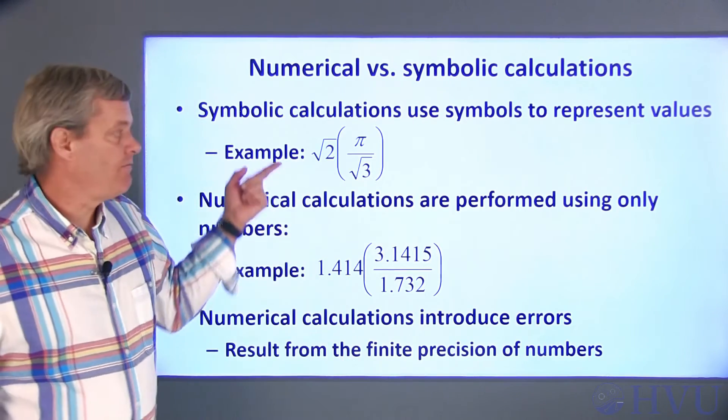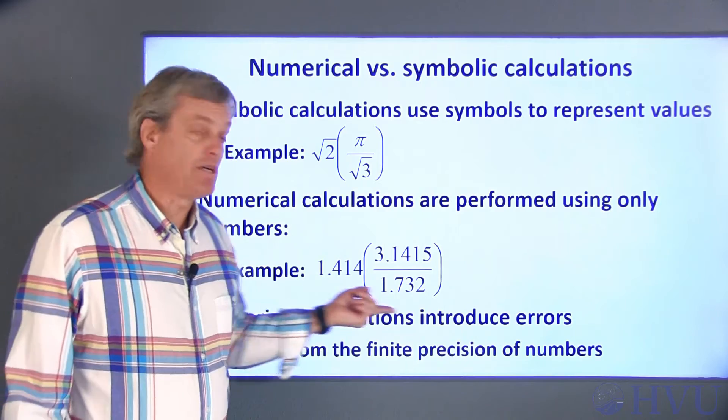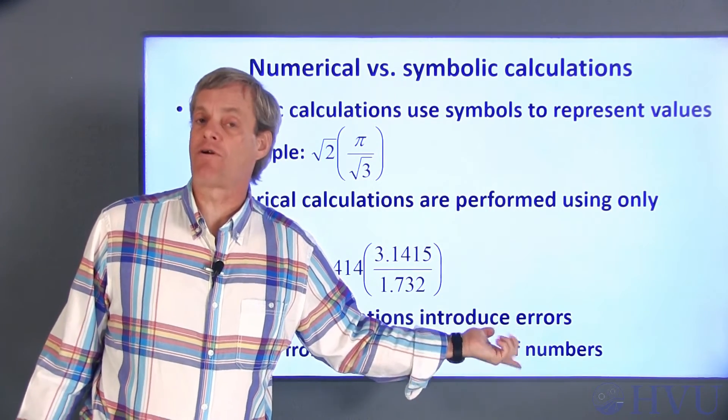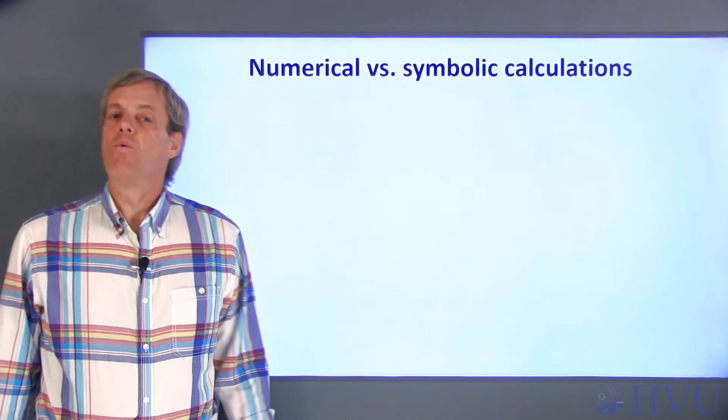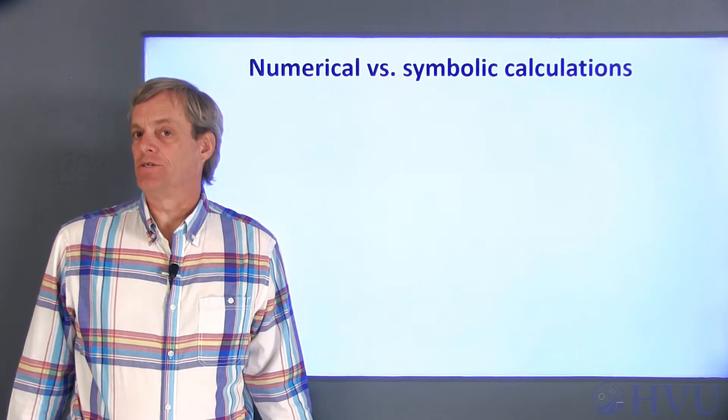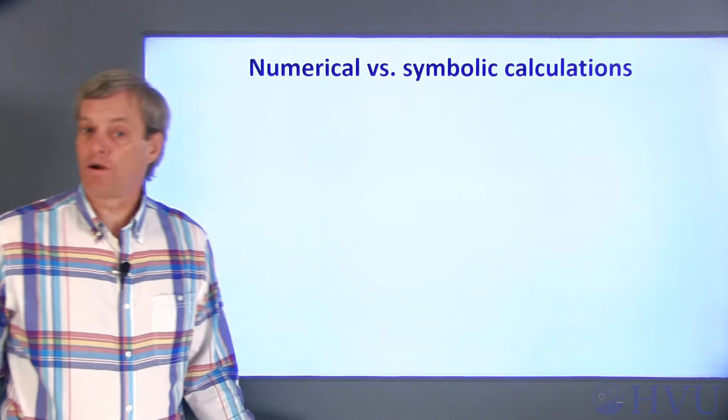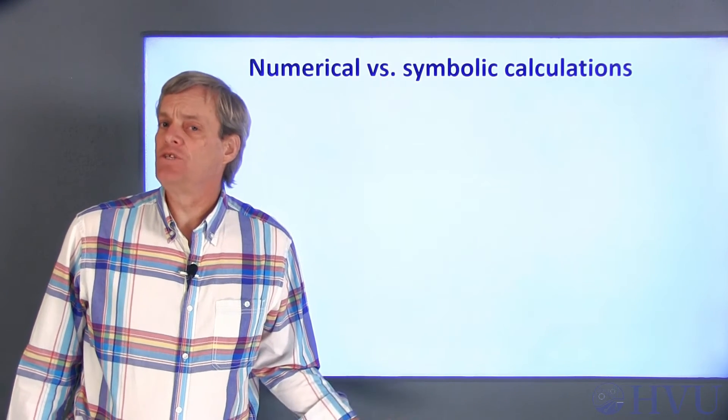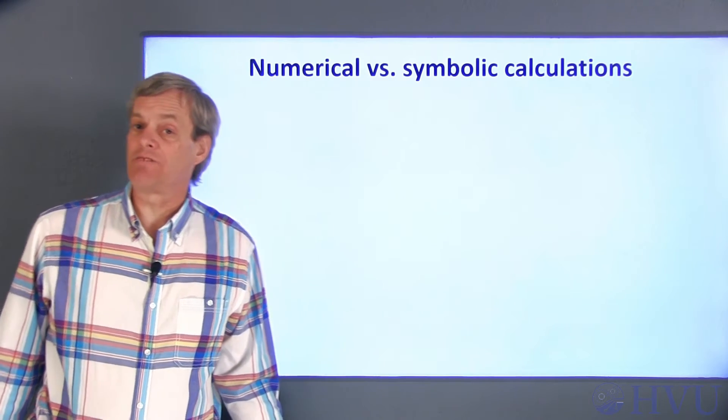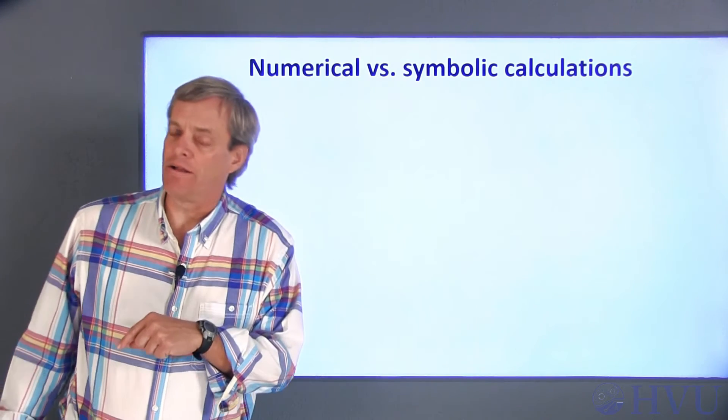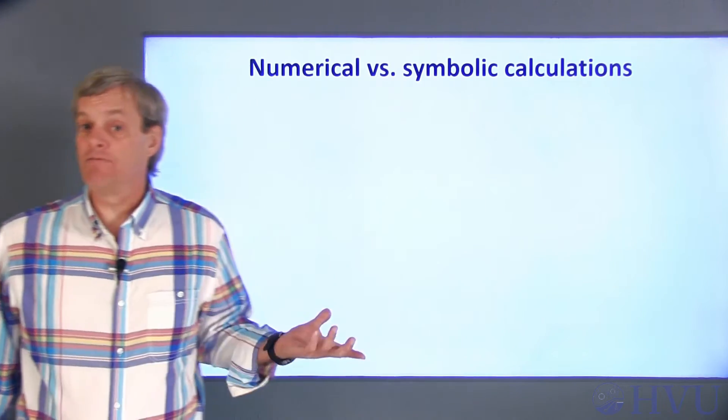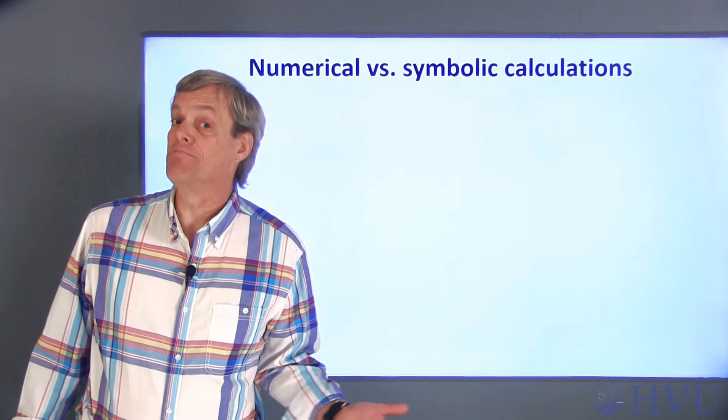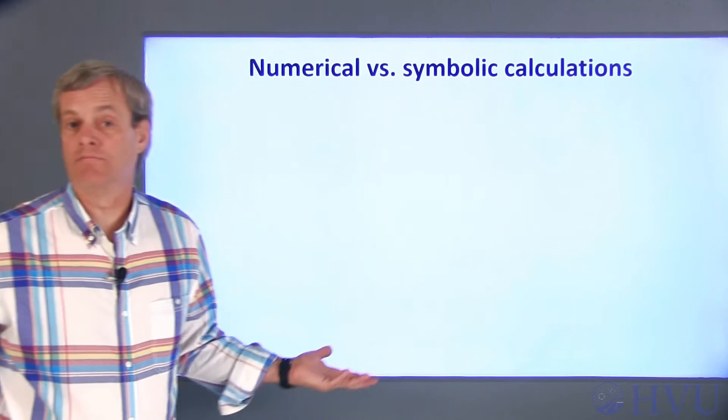In this case, we'd evaluate this expression using an approximation and pass a number which contains an acceptable error onto the machine shop. One problem with numerical calculations occurs when the errors become larger than whatever error may be deemed as acceptable. This usually happens when a long series of calculations that each have a small error are performed. The individual errors can accumulate and become large errors. This is a major difference between numerical and symbolic calculations.